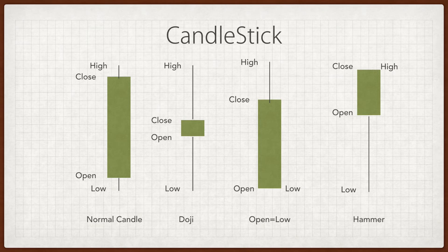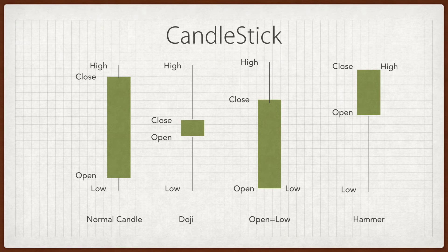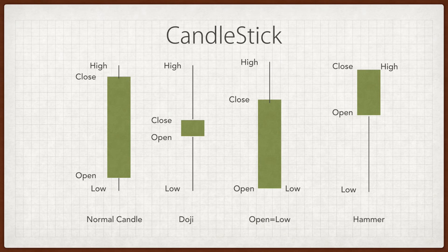Have a look at the open-equals-to-low candle, where a stock was in good momentum. It last closed at 100, then opened at 102 — which was the day's low — and from 102 it started going up, reaching 107. Then investors began booking profits, and the share price came back down and closed at 105.